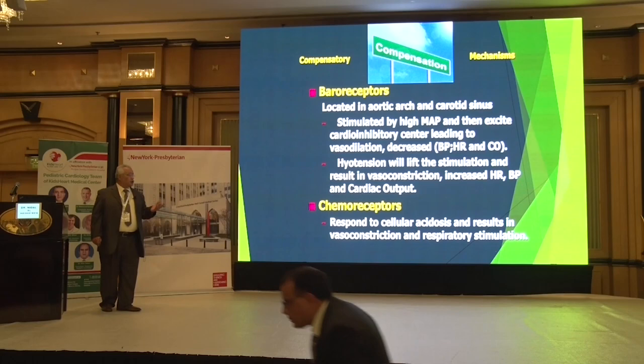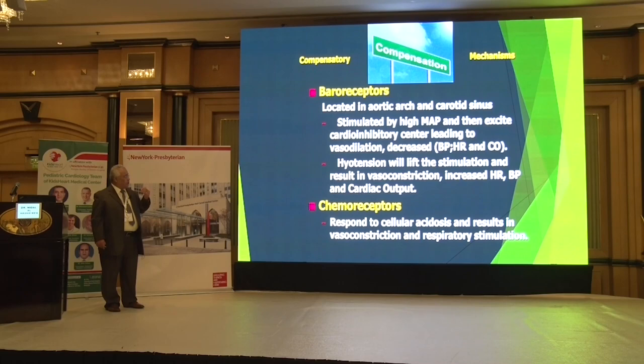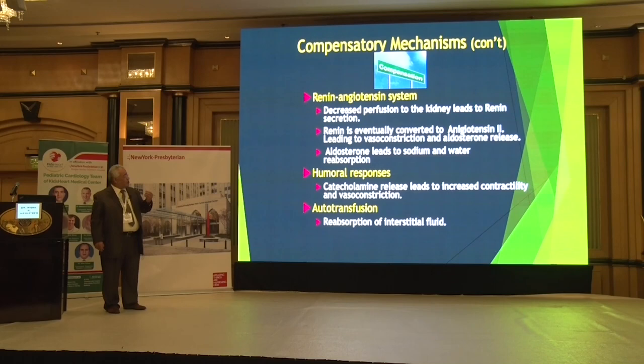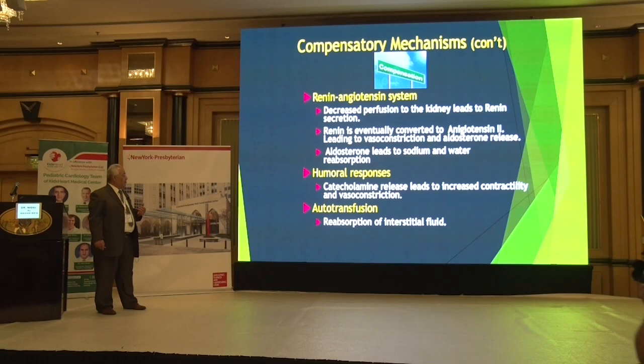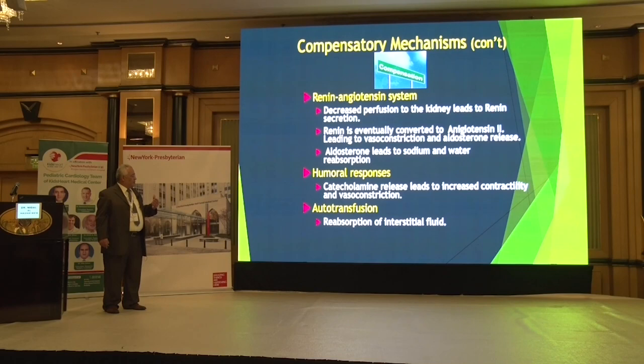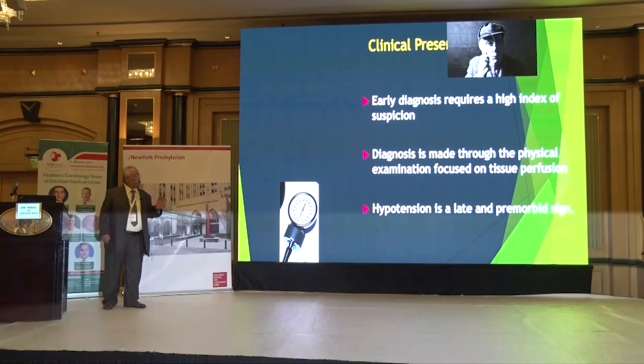Chemoreceptors usually respond to acidosis and result in vasoconstriction. If blood flow to the kidneys is less, renin will be secreted, converted to angiotensin 2, leading to vasoconstriction and aldosterone release. Aldosterone leads to sodium and water absorption. Catecholamines also respond to acidosis and hypotension, increasing contractility and causing vasoconstriction. Auto-perfusion is the reabsorption of interstitial fluid.